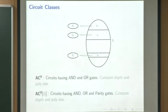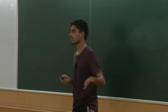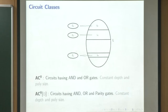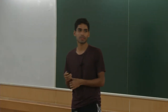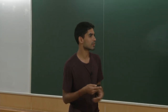AC0 and AC0 parity are circuit classes where AC0 uses AND and OR gates, and AC0 parity uses AND, OR, and parity gates. The definition really requires circuits of constant depth and polynomial size, but we abuse this notation throughout. So we can say something like an AC0 parity circuit of depth log log n and size exponential in root n.